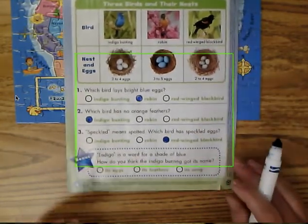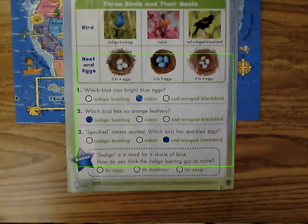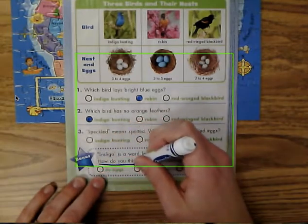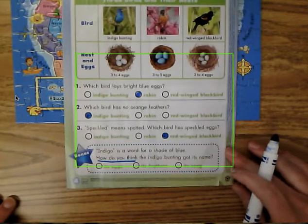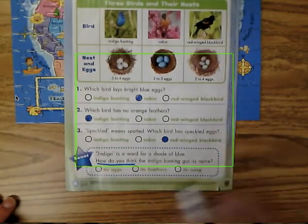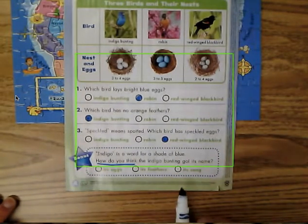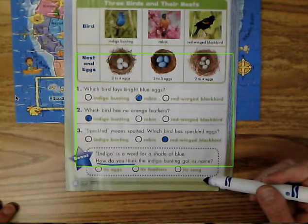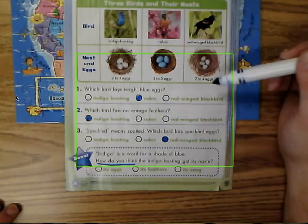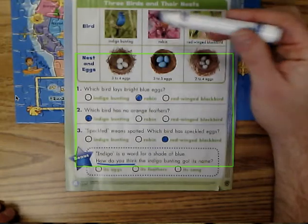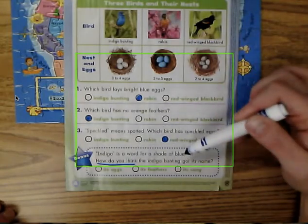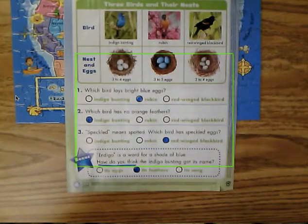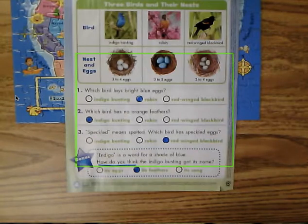This final question you have to infer. It says indigo is a word for a shade of blue — how do you think the indigo bunting got its name? From its eggs, its feathers, or its song? Well, I don't know that its song would be a shade of blue, and its eggs aren't blue — that's the robin. Look at its feathers — they look pretty blue. So the indigo bunting got its name from its feathers. I underlined 'how do you think' because words like think, believe, maybe, or perhaps are all words you use when you're making inferences.